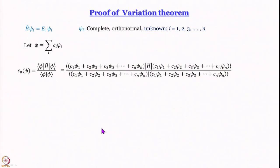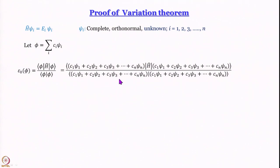I deviate a little from McQuarrie's treatment — McQuarrie uses n as index but I use i to avoid confusion. Now let us define an arbitrary wave function phi as a sum of c_i psi_i. This is valid because psi_i's form a complete orthonormal set — they are like coordinates of function space. Any arbitrary function in that space can be expressed in terms of those coordinates. We define epsilon_0 as integral phi-star H phi divided by integral phi-star phi over entire function space. In the numerator we have phi-star, which is the complex conjugate, left-multiplying H operating on phi, which equals H operating on c_1 psi_1 plus c_2 psi_2, and so on.